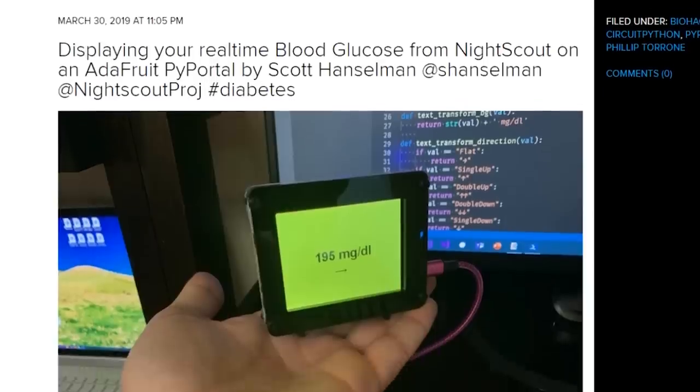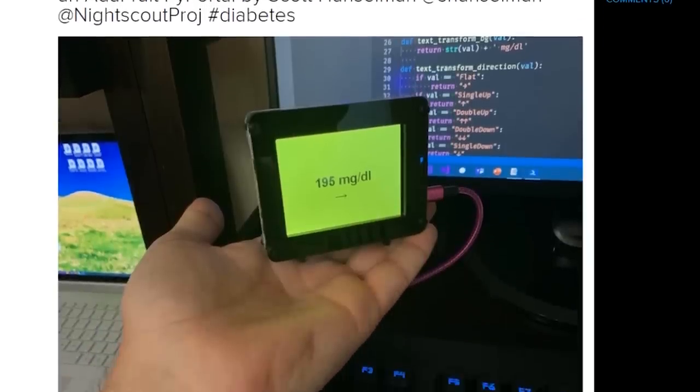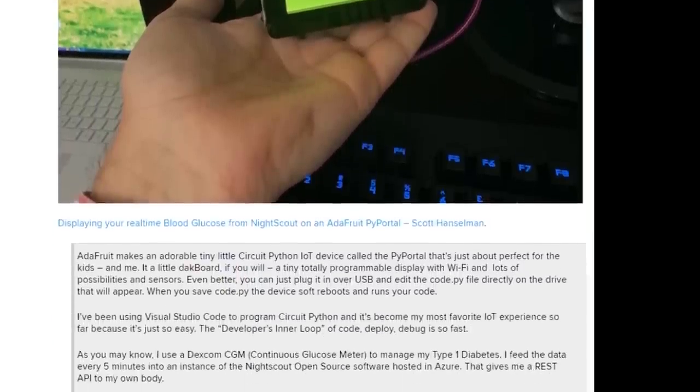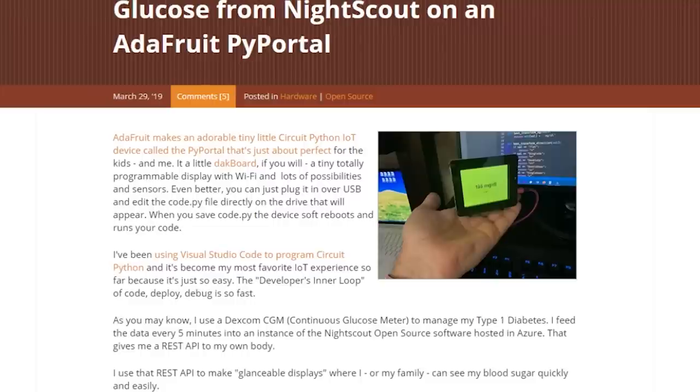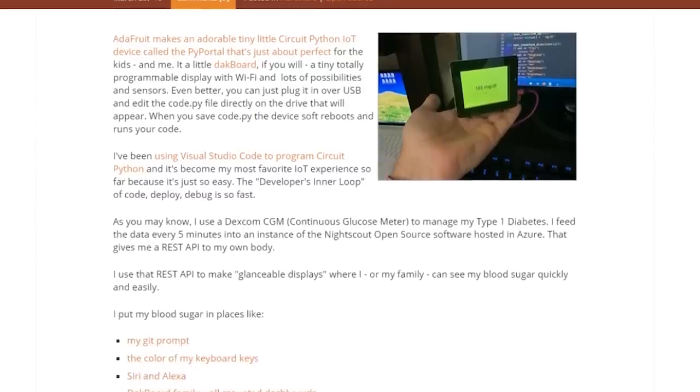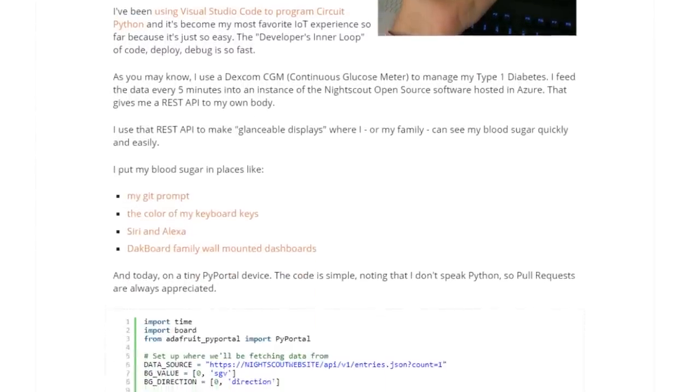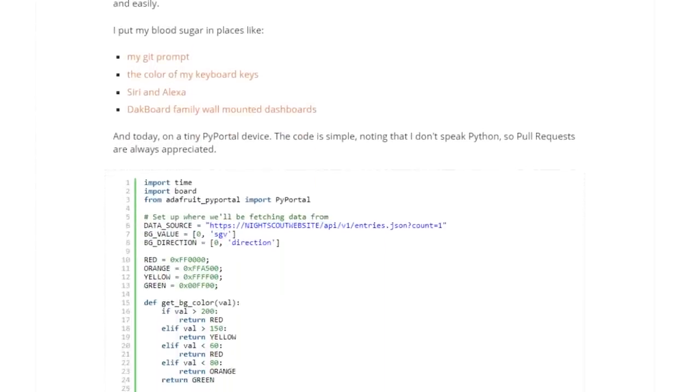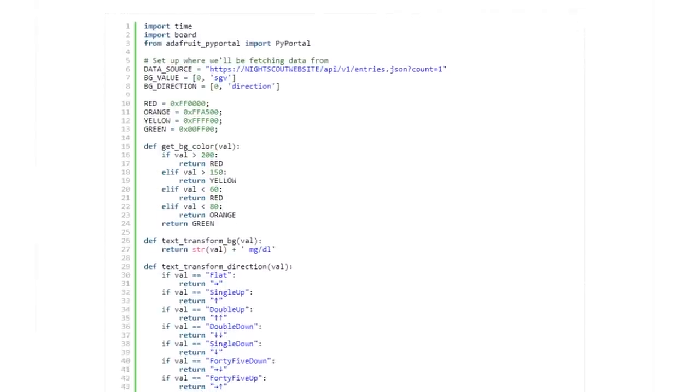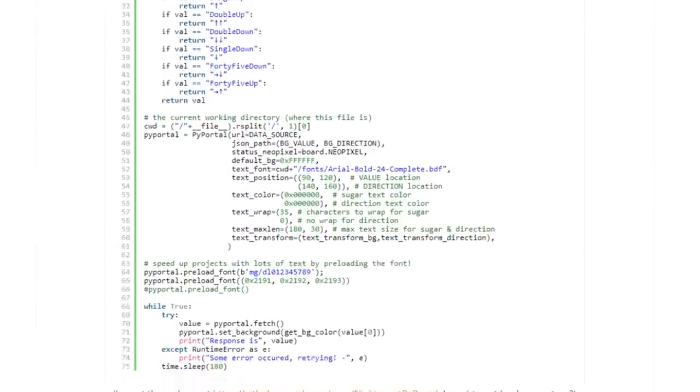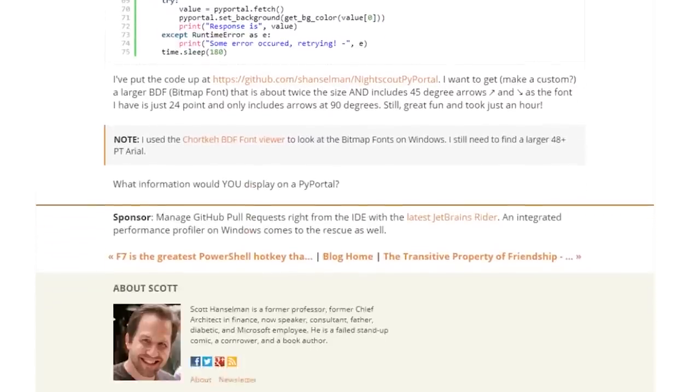And finally, an inspiring project from the Adafruit community. Check out this blood glucose display by Scott Hanselman. The project uses a Pi Portal board to communicate with NightScout, an open source software that, in Scott's case, takes data from a continuous blood glucose monitor to help manage his type 1 diabetes. On Scott's blog, you can find out how he turned the Pi Portal into a glanceable display to keep an eye on his blood sugar.